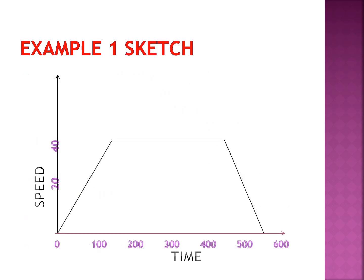Here is a sketch of the graph. There is constant acceleration from zero up to 40 m/s for the first portion, then constant speed of 40 m/s, then the train comes to rest in 100 seconds. The overall shape is a trapezium. To get the distance, you find the area under the trapezium. To get the acceleration, look at the section where speed is increasing with time; for deceleration, look at the section where speed is decreasing.